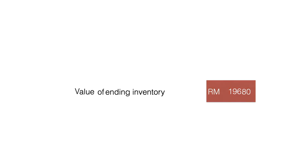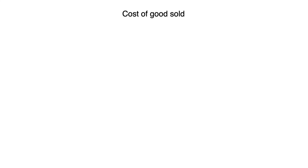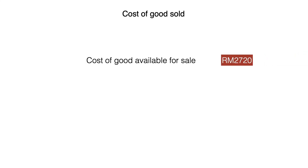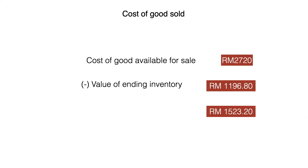We move to the next requirement — calculating cost of goods sold. We start with the cost of goods available for sale of RM2,720, then subtract the ending inventory value we just calculated. The cost of goods sold is RM1,523.20.